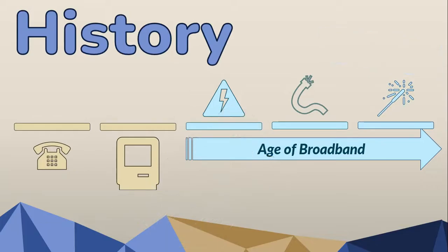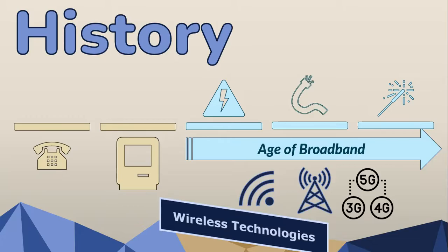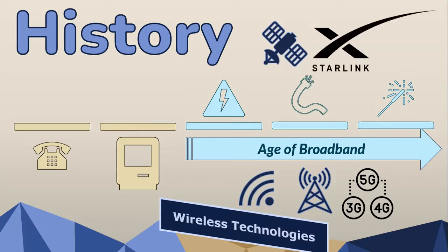The advancement of wireless technologies such as Wi-Fi and cellular networks brought about wireless broadband access. Wi-Fi allows devices to connect to local networks without physical cables, while cellular networks provide mobile broadband using 3G, 4G, and 5G technologies. There are also exciting new developments using satellites to transmit data wirelessly, especially to remote areas. The current Starlink project developed by Elon Musk's SpaceX is working to provide high-speed satellite internet access to users across the world.